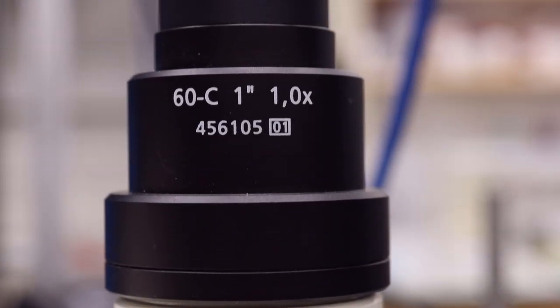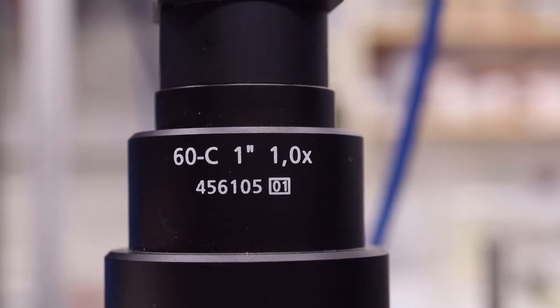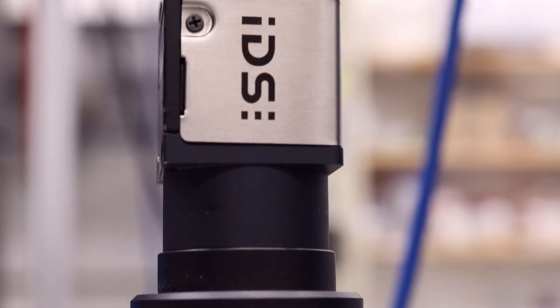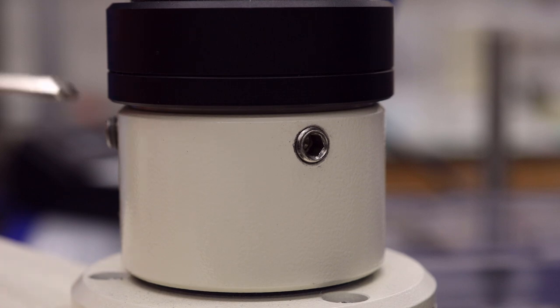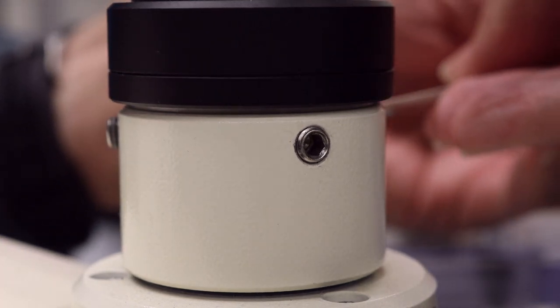Here's the camera port. The USB camera is attached through a 1x C-mount adapter. We loosen the screws at the camera port and rotate the camera as needed.